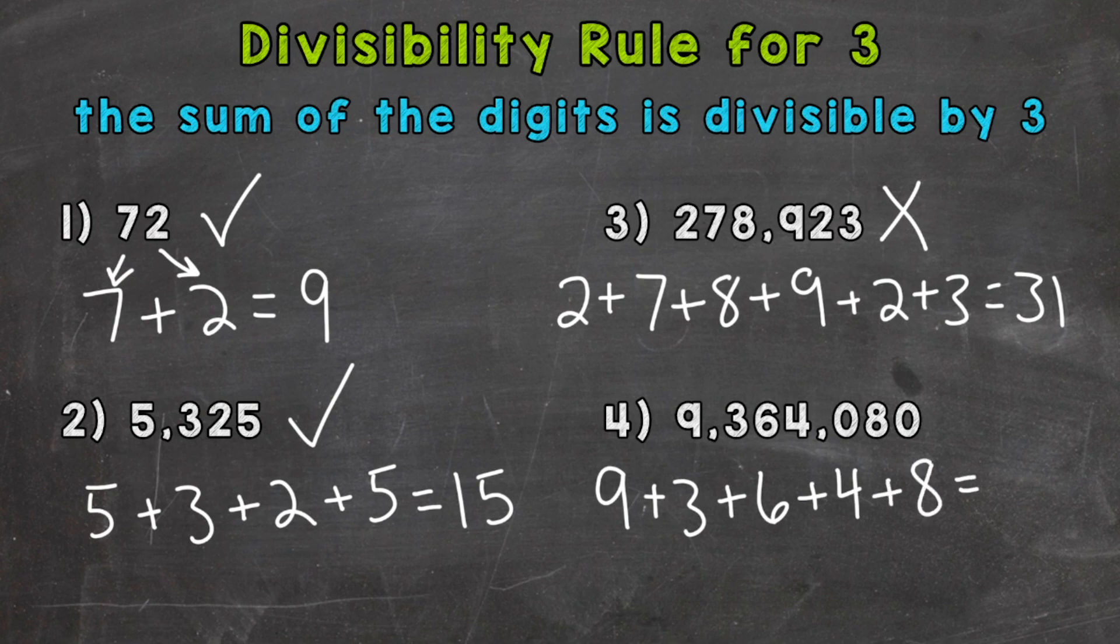So 9 plus 3 is 12, plus 6 is 18, plus 4 is 22, plus 8 is 30. So is 30 divisible by 3? Yes,